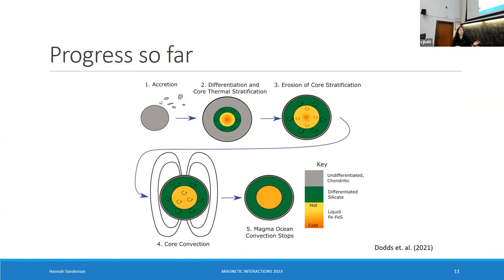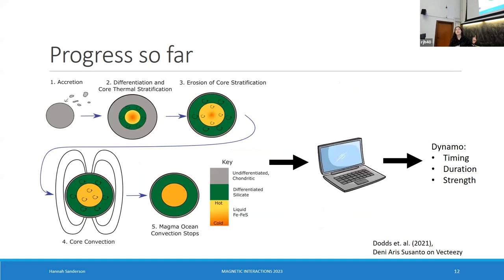So we can have the mantle convecting and the core convecting and we can have thermal dynamos. Later on, the mantle is still cooling — eventually mantle convection will stop and it will begin to conduct. That can either lead to the cessation of core convection because you're not having as high a heat flux at the core-mantle boundary. But then later, you could begin to have compositional convection as the core begins to solidify. What I've done so far is take this, use some equations to put it into a computer, spend a lot of time debugging, and then eventually get out the timing, duration, and strength — and these are the things I actually care about.